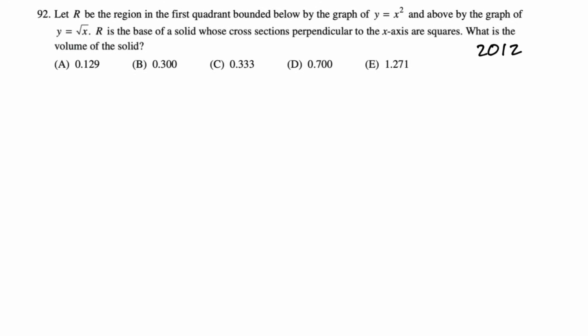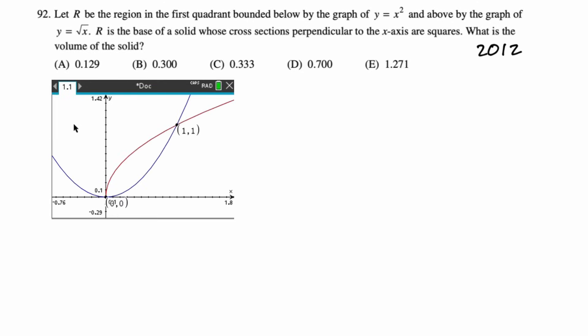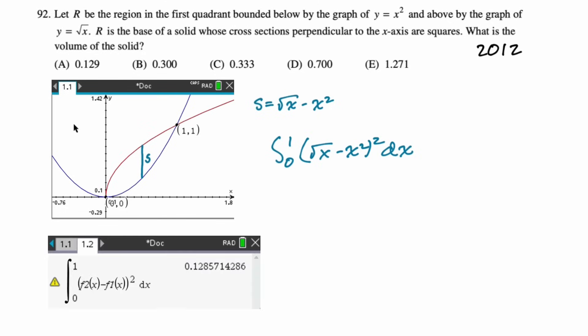From 2012: the region bounded below by y equals x squared and above by y equals radical x, with square cross sections perpendicular to the x axis. s is root x minus x squared — top minus bottom. We integrate s squared from zero to one. It's a calculator problem; I plugged it in and circled the answer.